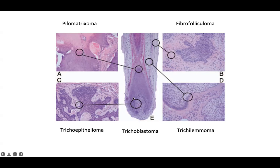Trichoepithelioma is derived from the area by the dermal papilla and matrical cells. You'll have a basaloid proliferation that looks a lot like a basal cell carcinoma. In fact, basal cell carcinoma can be thought of as a malignant adnexal tumor. This is where BRRP4 is positive — the immunohistochemical stain BRRP4 is positive in this area of the hair follicle normally. That's why trichoepithelioma and basal cell carcinomas often express BRRP4, and they look very similar. We will compare and contrast features of basal cell and trichoepithelioma.